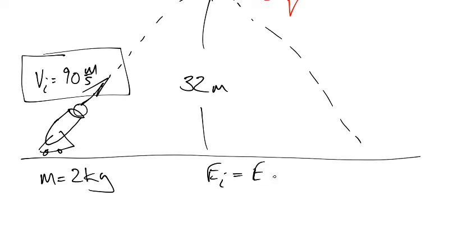You can say initial energy equals final energy. Initially, all we have is kinetic energy. We're starting at zero down here. And finally, all we have is gravitational potential energy. Or do we?